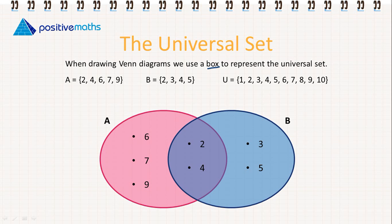So if we represent this on the Venn diagram, we have 6, 7, and 9 are just in A, 2 and 4 are in the intersection, and 3 and 5 are just in B.